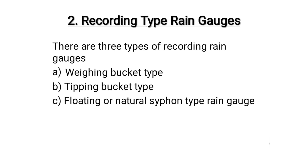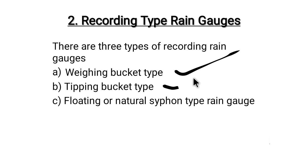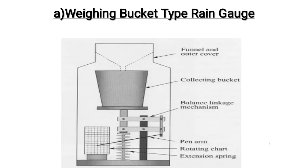The next type is the recording rain gauge. Recording type rain gauges are of three types: weighing bucket type, tipping bucket type, and the floating or natural siphon type rain gauge. We will learn about each of these three in detail.